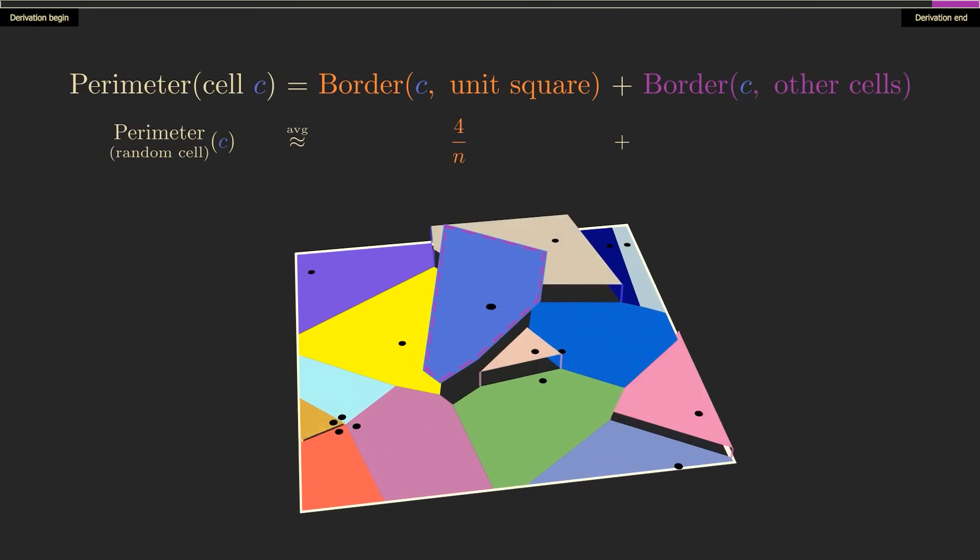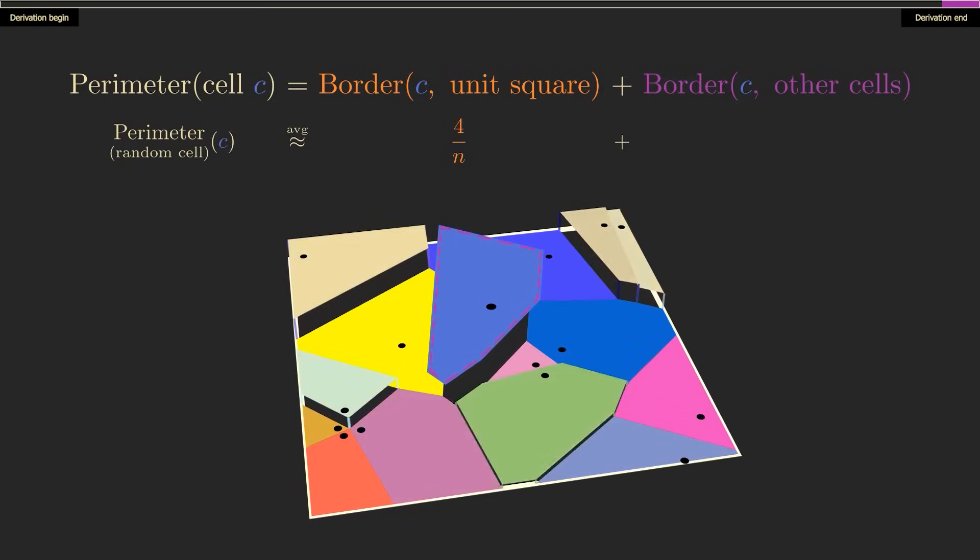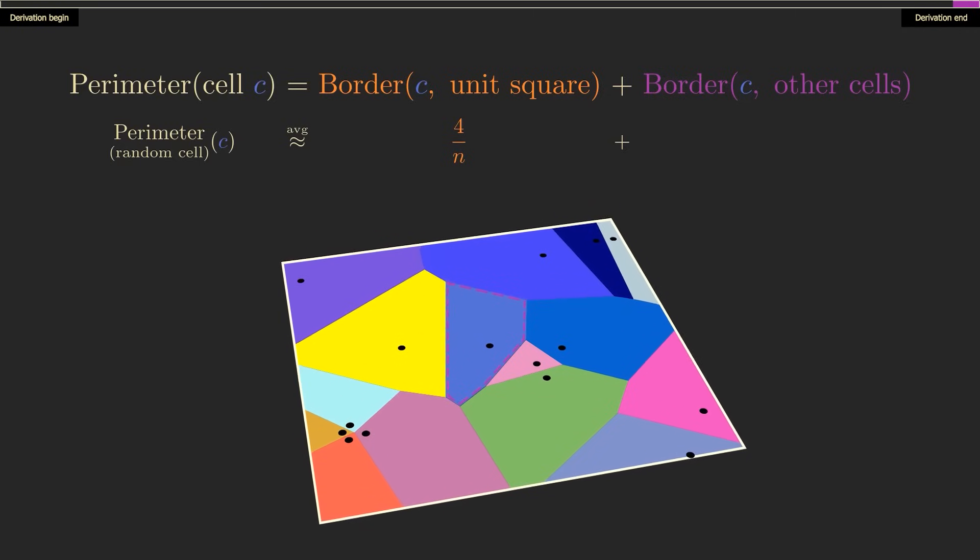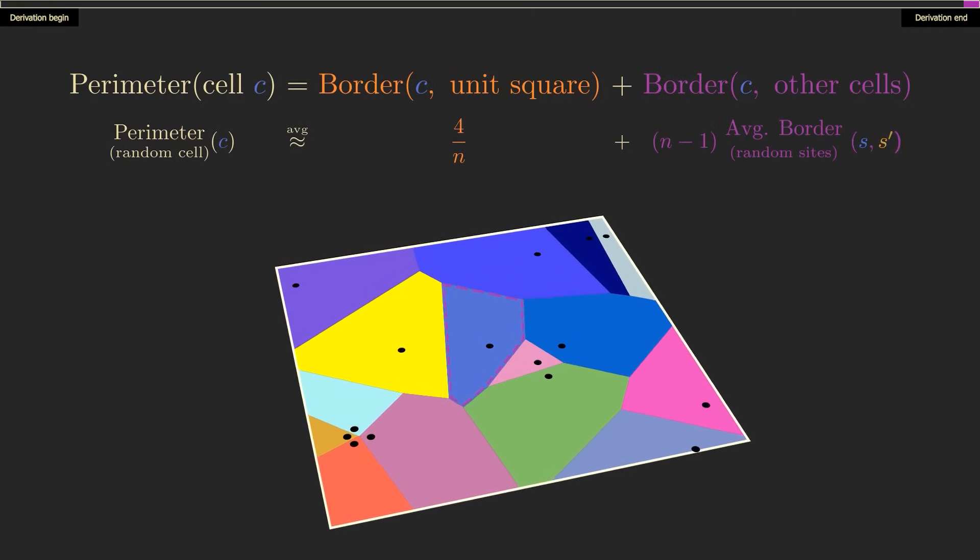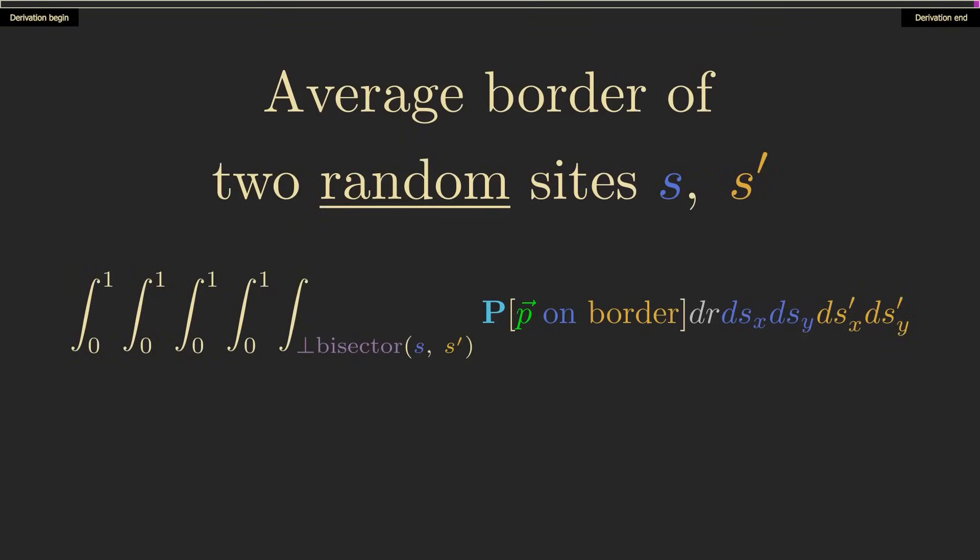For the latter, there are n-1 other cells, so we end up with n-1 times the average border length between two random cells, which is the integral we came up with a moment ago. Putting all that together, we have an exact formula for the average perimeter.